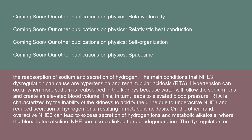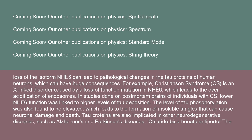NHE can also be linked to neurodegeneration. Dysregulation or loss of the isoform NHE-6 can lead to pathological changes in tau proteins of human neurons. Christensen syndrome (CS) is an X-linked disorder caused by a loss-of-function mutation in NHE-6, which leads to over-acidification of endosomes. In post-mortem brains of individuals with CS, lower NHE-6 function was linked to higher levels of tau deposition, and elevated tau phosphorylation leads to insoluble tangles causing neuronal damage and death. Tau proteins are also implicated in other neurodegenerative diseases such as Alzheimer's and Parkinson's.